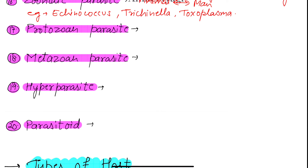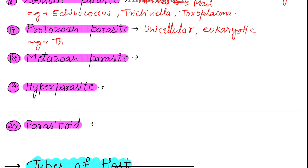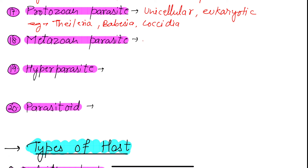Next we have the protozoan parasite. Protozoan parasites are those parasites which are unicellular and eukaryotic. These are one of the most important parasites in veterinary parasitology. Examples of protozoan parasites are Theileria, Babesia, and Coccidia.